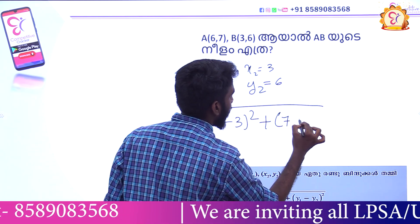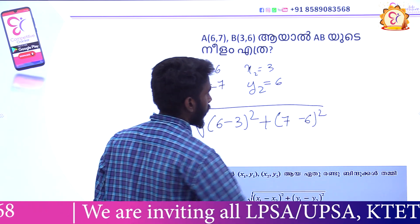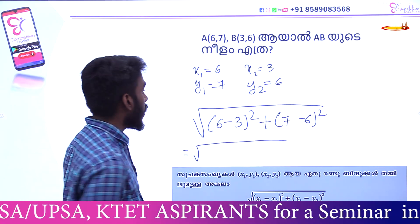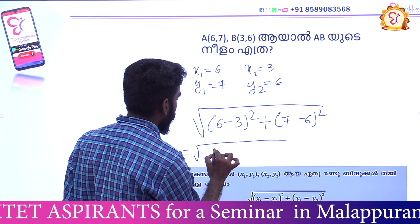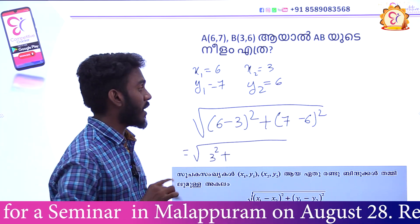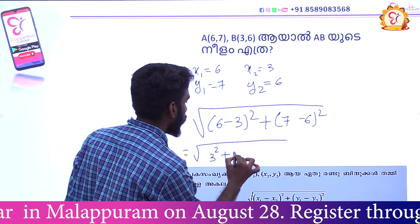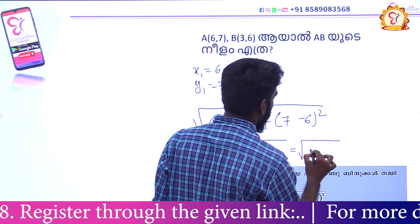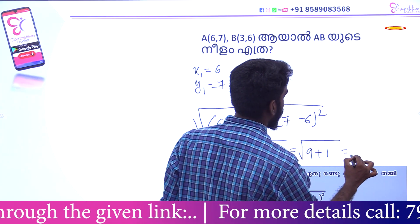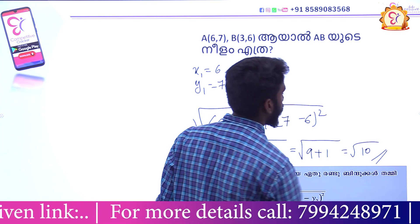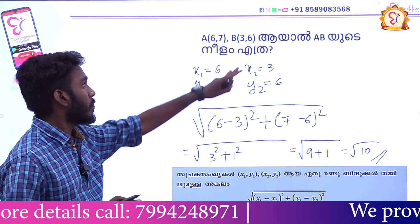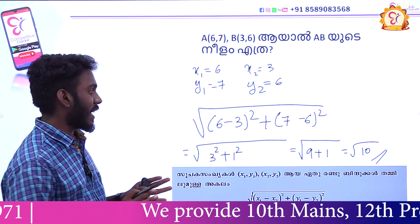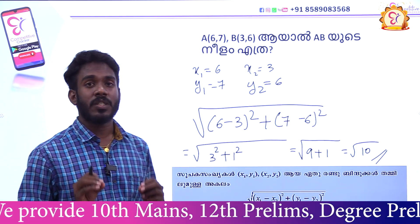Then we have a minus r whole square. If we have the difference: 6 minus 3 is 3, and 8 minus 6 is 2 — wait, 6 minus 3 is 3, so 3 squared plus 1 squared. 3 squared is 9, so that is the root of 9 plus 9, which is the root of 18. So we know this gives us the distance.